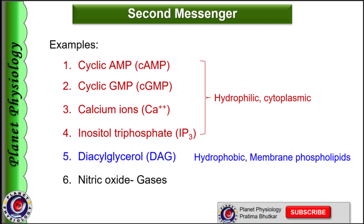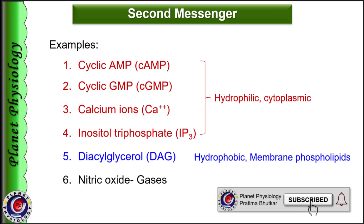Examples of second messengers include cyclic AMP, cyclic GMP, calcium ions, and inositol triphosphate — all of which are hydrophilic cytoplasmic second messengers. Diacylglycerol is a hydrophobic second messenger. Nitric oxide and carbon monoxide fall in the category of gases.